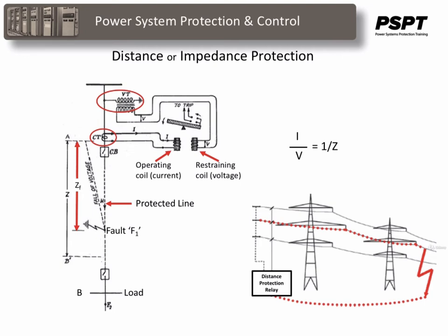The protected zone is not exact, but it is good enough to provide adequate high-speed protection, especially when combined with multiple zones and high-speed end-to-end communication signaling. One of the problems with this simplistic setup is that the relay does not know what direction the current is flowing. It operates solely on the magnitude of the current and will operate for faults in the opposite direction, looking back into the bus.